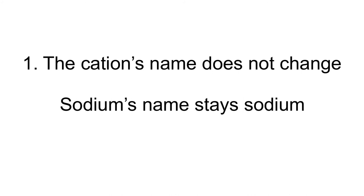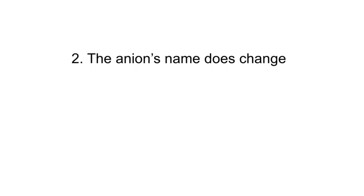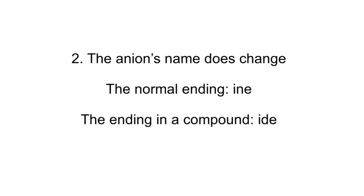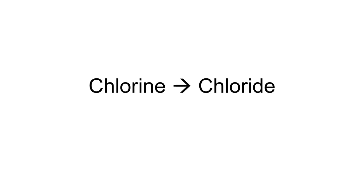For the cation, we write the whole name as we remember it. The rule for naming anions in a binary compound is that you drop the last three letters of the name, which the majority of the time is -ine, and replace them with -ide. Chlorine would become chloride.